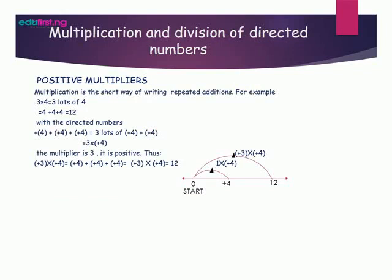Positive multiplier. Multiplication is a short way of writing repeated addition. For example, 3 times 4 equals 4 plus 4 plus 4, which equals 12. Our answer is going to be 12, as you can see on the number line.